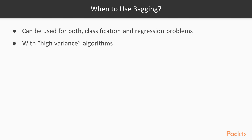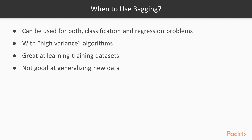In general, you can use Bagging with what we call high variance algorithms. Those are algorithms that usually work great when learning on a training dataset, but they're not generalizing enough on new data. They learn some patterns from the training data, but when shown a totally new dataset, they're usually not that good at generalizing. This is also called overfitting.